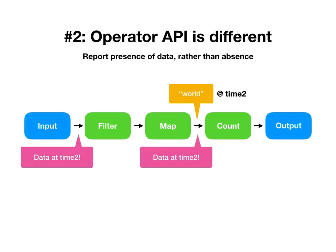Similarly, there are points in the dataflow graph where data exists — here we have 'world' at time two. It's only correct to inform people downstream there might be data at time two, though at the moment this is strictly redundant with the statement the input operator made. But it's actually really important, because the input operator might at some point say it's done with time two and may now have data at time three.